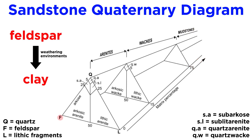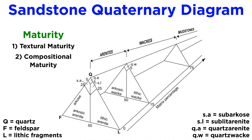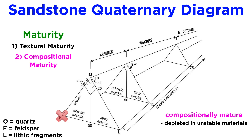Recall from the previous tutorial that feldspar is unstable in weathering environments and alters to clay over time. The relative concentration of stable materials, such as quartz, to unstable materials, such as feldspar, is used in conjunction with the degree of rounding, sorting, and amount of matrix to determine a sandstone's maturity. More specifically, maturity is broken down into two categories: textural and compositional. Compositionally mature sandstones are depleted in materials that are thermodynamically unstable in weathering environments, including most igneous and metamorphic minerals except for quartz. Consequently, they tend to be quartz arenites and quartz wackes, though they can occasionally be lithic arenites or lithic wackes if the lithic fragments are quartz-rich, such as chert or quartzite.